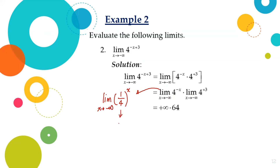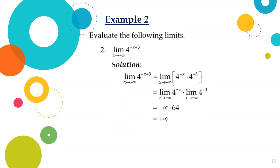Since the base is 1/4, which is greater than 0 but less than 1, then as x approaches negative infinity, the limit of the function will be positive infinity. Moreover, since 4^3 is a constant equal to 64, the limit of a constant is always equal to the constant itself. Positive infinity times 64 equals positive infinity. Hence, the limit of 4^(-x+3) as x approaches negative infinity is equal to positive infinity.